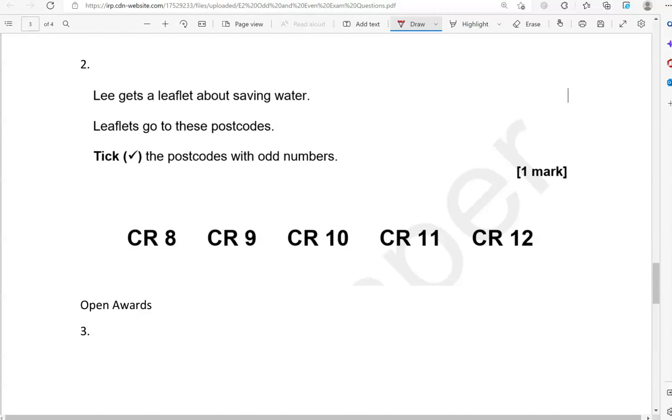Lee gets a leaflet about saving water. Leaflets go to these postcodes. Tick the postcodes with odd numbers. CR8, 8, that's even. CR9, 9, that is odd. 10 is even. 11 is odd. 12 is even.